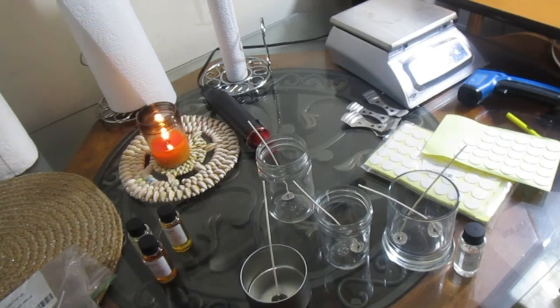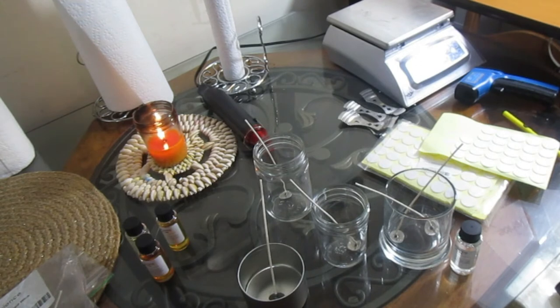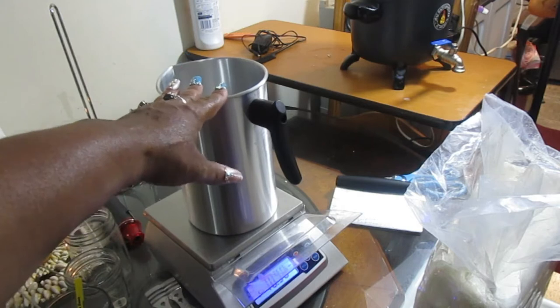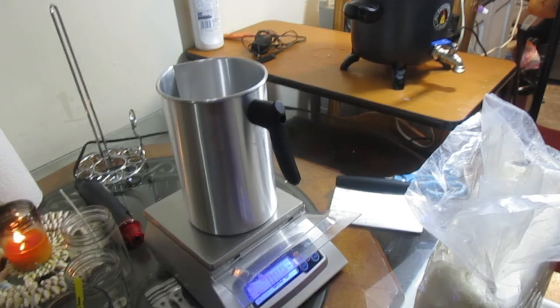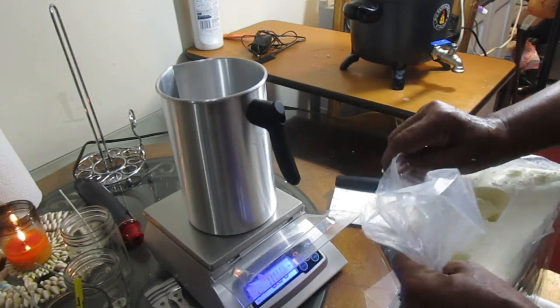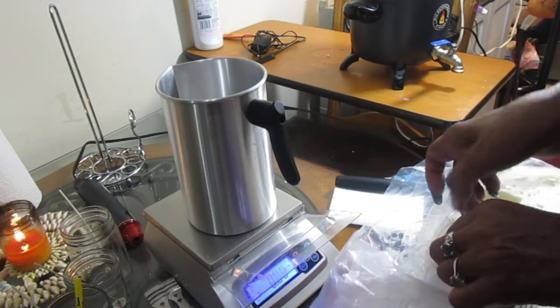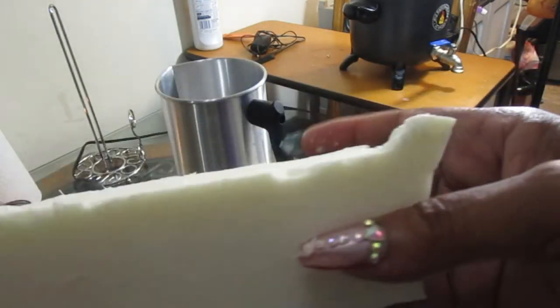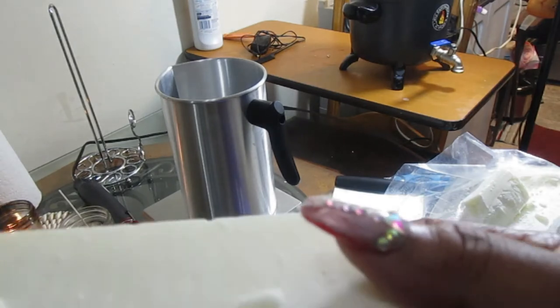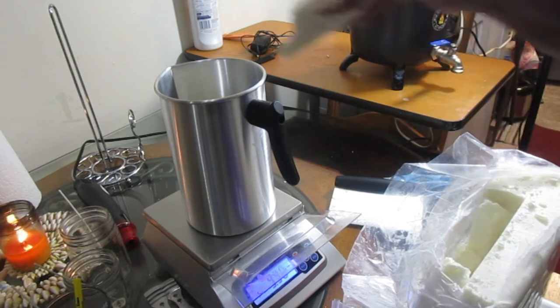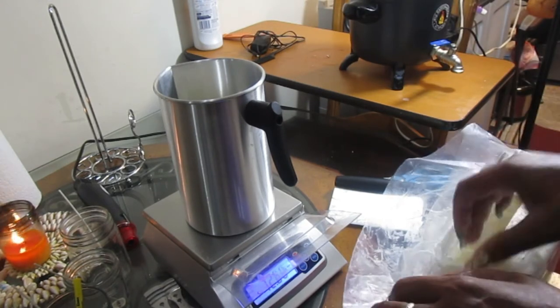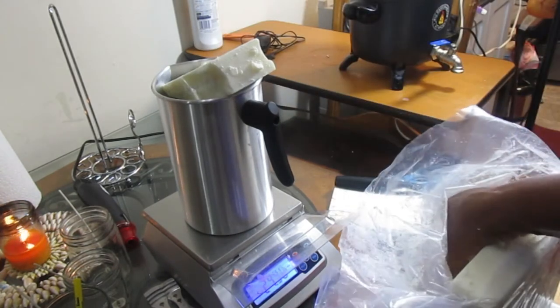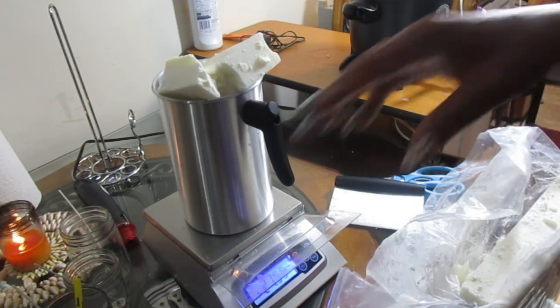First thing I want to do is weigh out my wax. Here's my pot, I'm going to tare that to zero while I get out a pound of this wax. I like this sort of kind of already because it's more creamier and it actually came a little pre-cut so I don't have to cut too much.